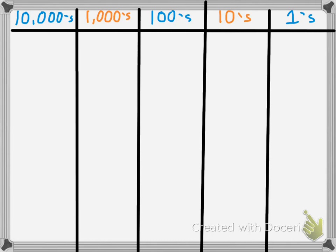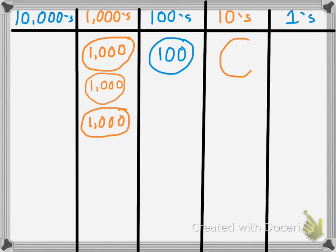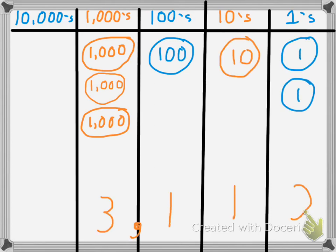Let's do another example. Again, the first thing I need to do is create my chart, so I have the ones, tens, hundreds, thousands, and ten thousands. Now I'm going to display a number. I have 1,000s disk, 2,000s disk, 3,000 disk, 100 disk, 1 tens disk, 2 ones disks — which gives me the same number: 3,112.